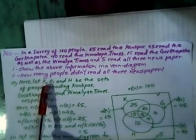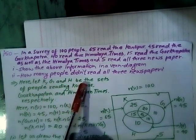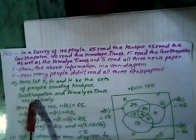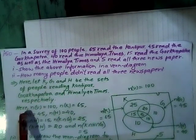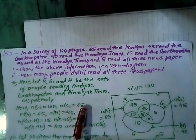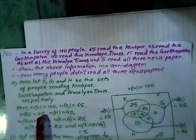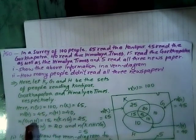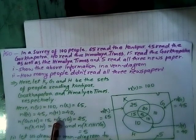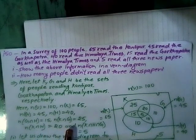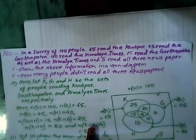Let K, G, and H be the set of people reading Kantipur, Gorkha Patra, and Himalaya Times respectively. Now: NU = 100, NK = 65, NG = 45, NH = 40. NG intersection H = 50, NK intersection G = 25, NK intersection H = 20, and NK intersection H intersection G = 5.